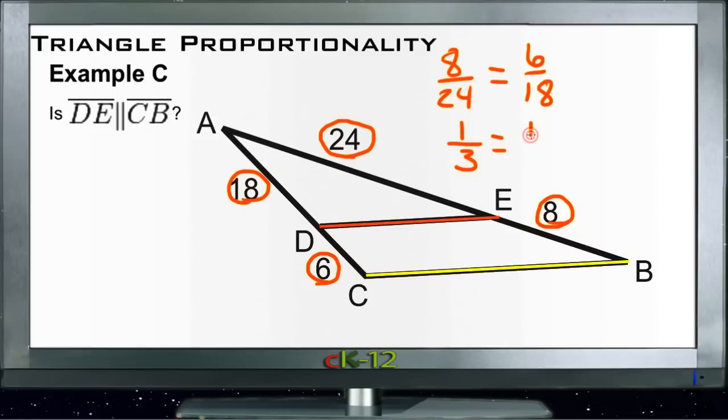And then 6 goes into 6 once and it goes into 18 three times. So then we don't need to do the cross multiplication at all—we already know that the ratio is the same. So if the ratio is the same, then yes, the two lines are indeed parallel. Sort of the reverse of that statement that we used before, and that's all we have.